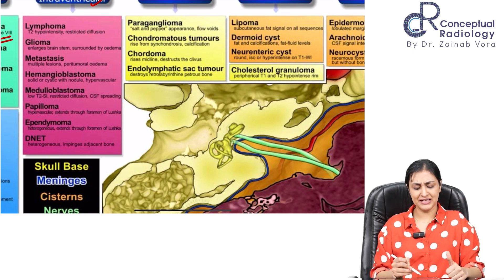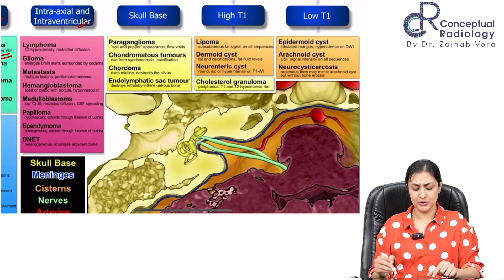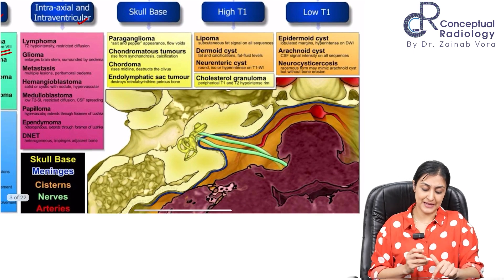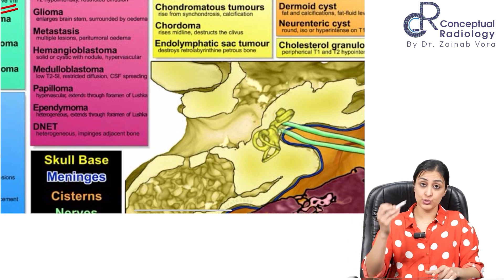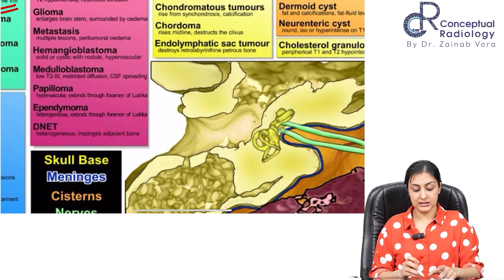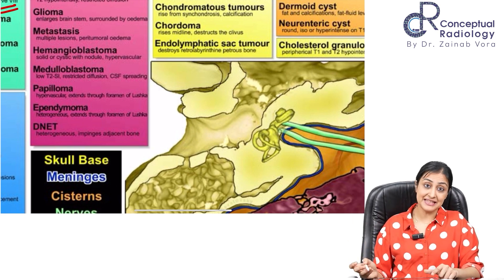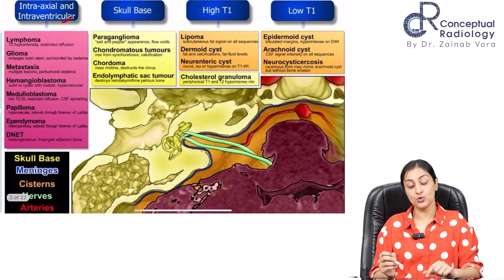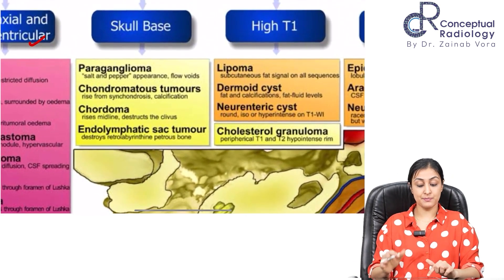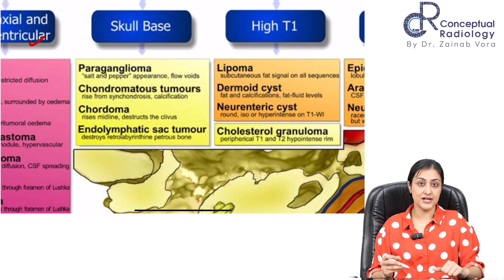Choroid plexus papilloma of the fourth ventricle can rarely enter the CP angle, but cases have been reported. Ependymoma can encroach up to the CP angle. DNET can occur in this area. For skull base lesions, paraganglioma is a highly vascular lesion that can come here.